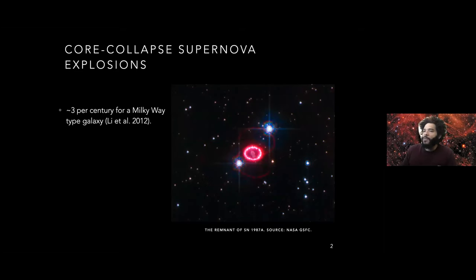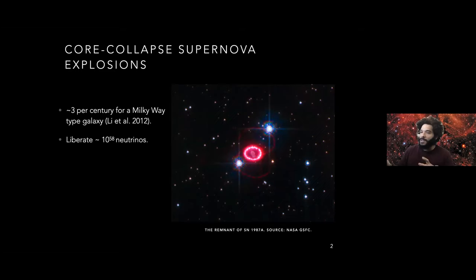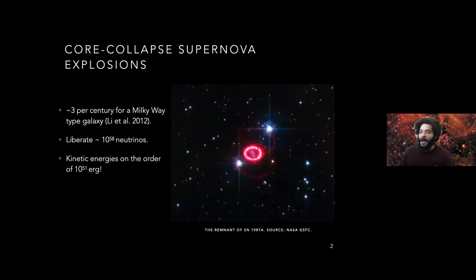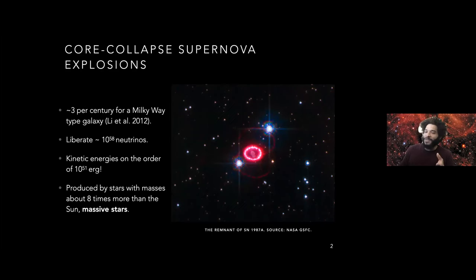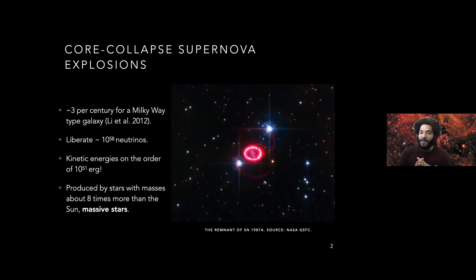In general, we expect about three core collapse supernova explosions per century for a Milky Way-type galaxy — pretty rare events. They liberate a tremendous number of neutrinos, and there are many opportunities to detect them combined with gravitational wave emission. They're very energetic, on the order of one Bethe — that's 10^51 ergs — and they're produced by stars about eight or more times more massive than the sun. That's what I'll be referring to when I say massive stars.